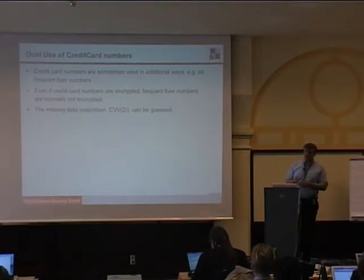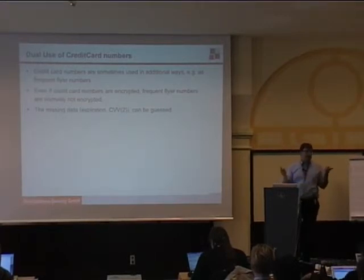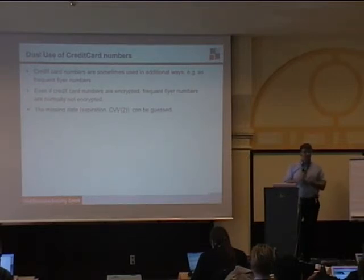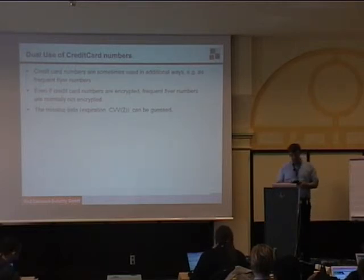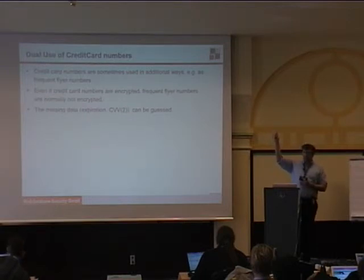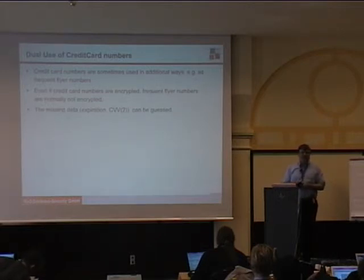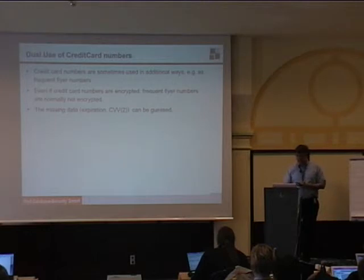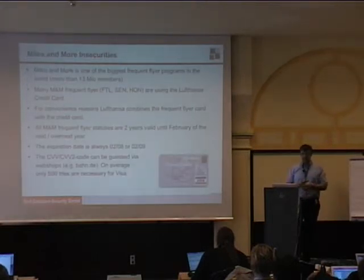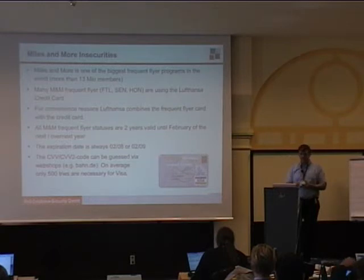Another problem with credit cards is dual use. Credit cards are used on one hand to pay, but in many cases if you are a frequent flyer, the credit card number is also your frequent flyer number. For example, with Miles & More — the biggest frequent flyer program in the world — higher-level members get a free credit card from Lufthansa or Austrian Airlines. For convenience, many people use it as their frequent flyer number as well.